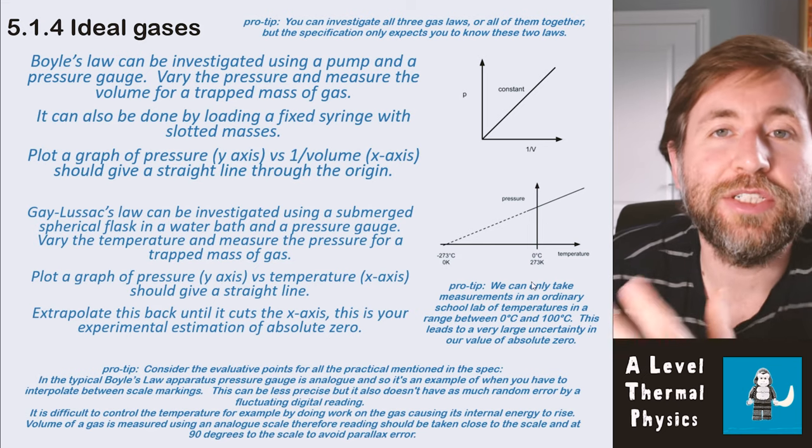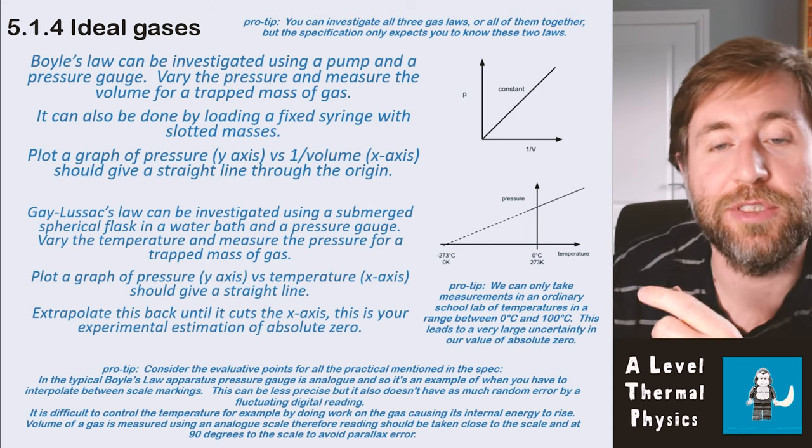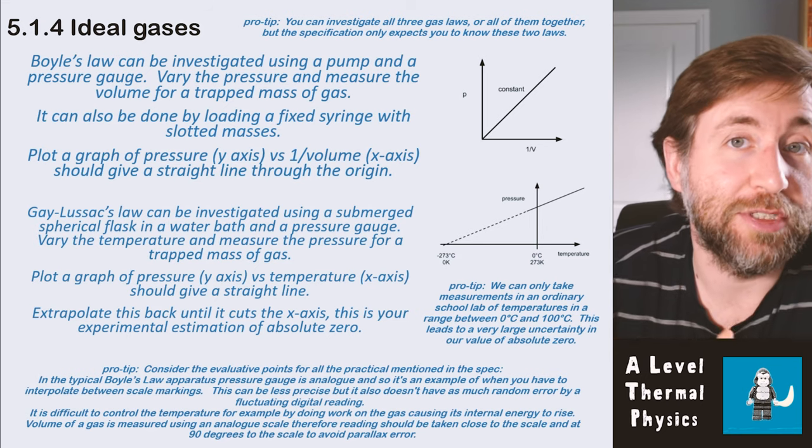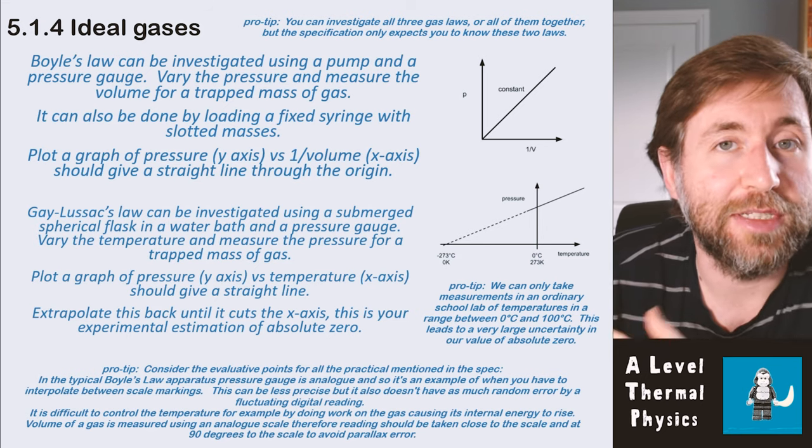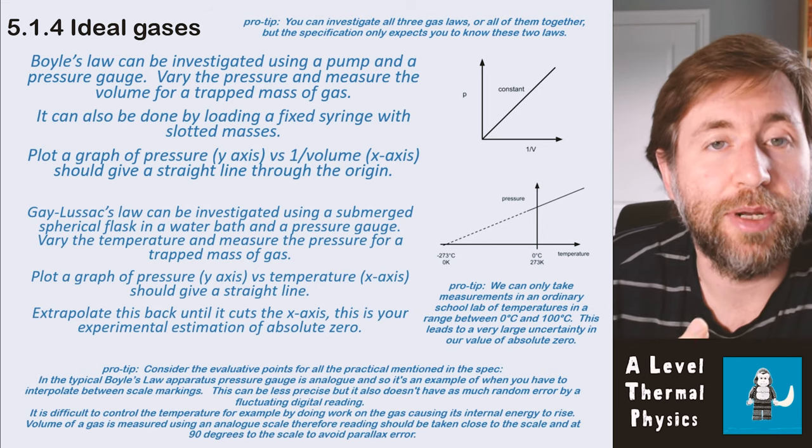So for example, in the typical Boyle's Law apparatus, the pressure gauge is actually analog. So that's an example of when you have to actually interpolate between scale markings. And this can be less precise, but it doesn't have as much random error as maybe a fluctuating digital pressure gauge would have. And again, for example, in the Boyle's Law apparatus, when you are pumping the gas, you're actually doing work on it.